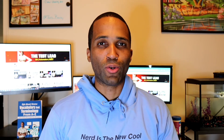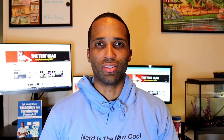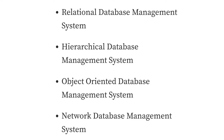Sometimes if two different applications are trying to access an Excel file, it may cause corrupt data because it's not built to handle that. This video will introduce you to the four major types of DBMS: relational database management system, hierarchical database management system, object-oriented database management system, and network database management system.